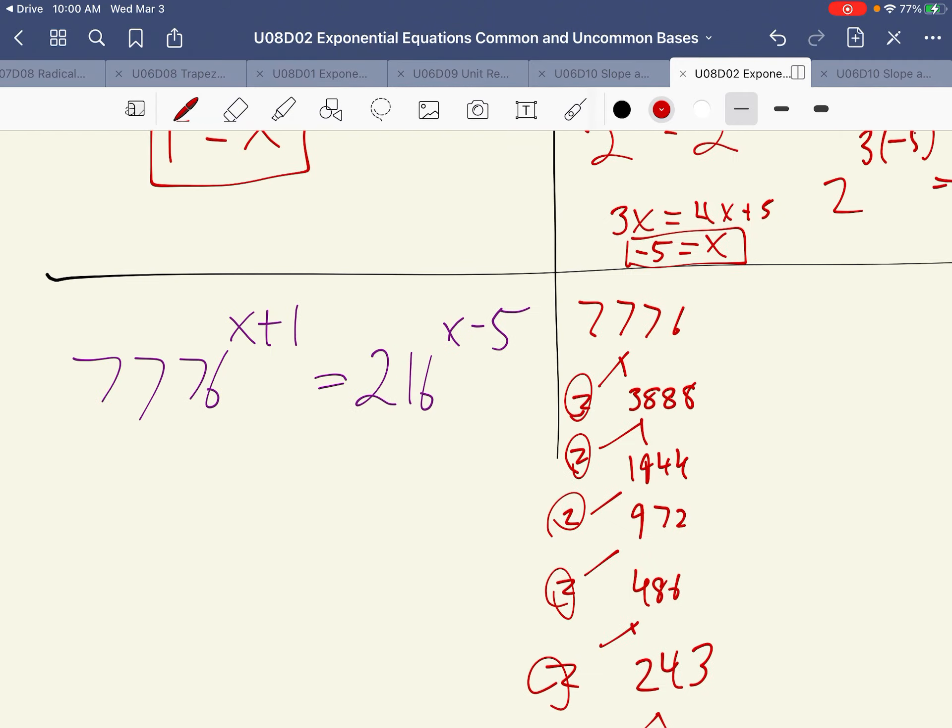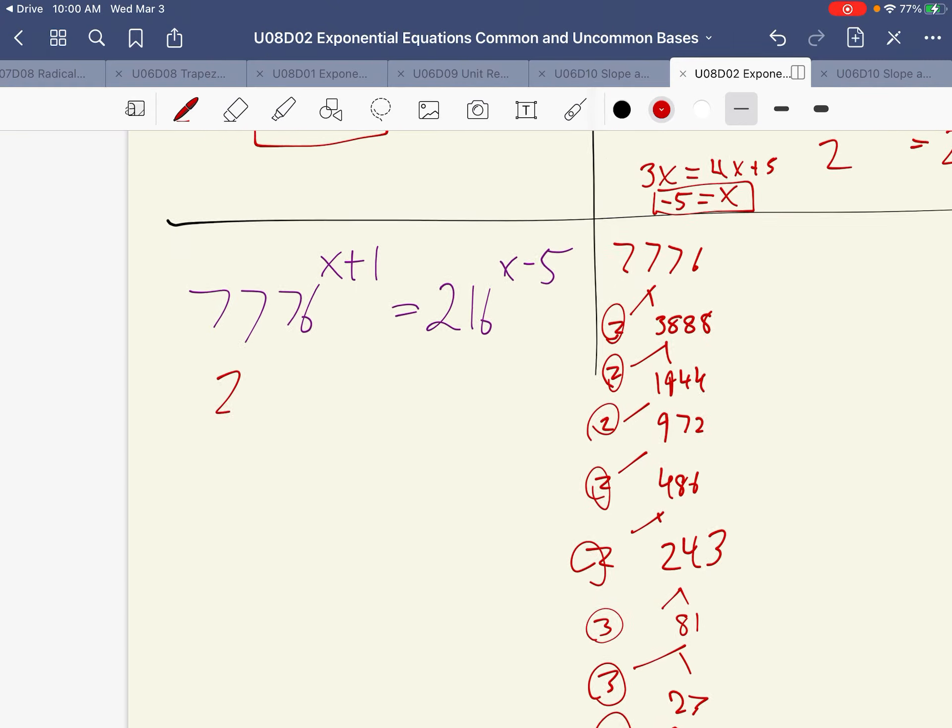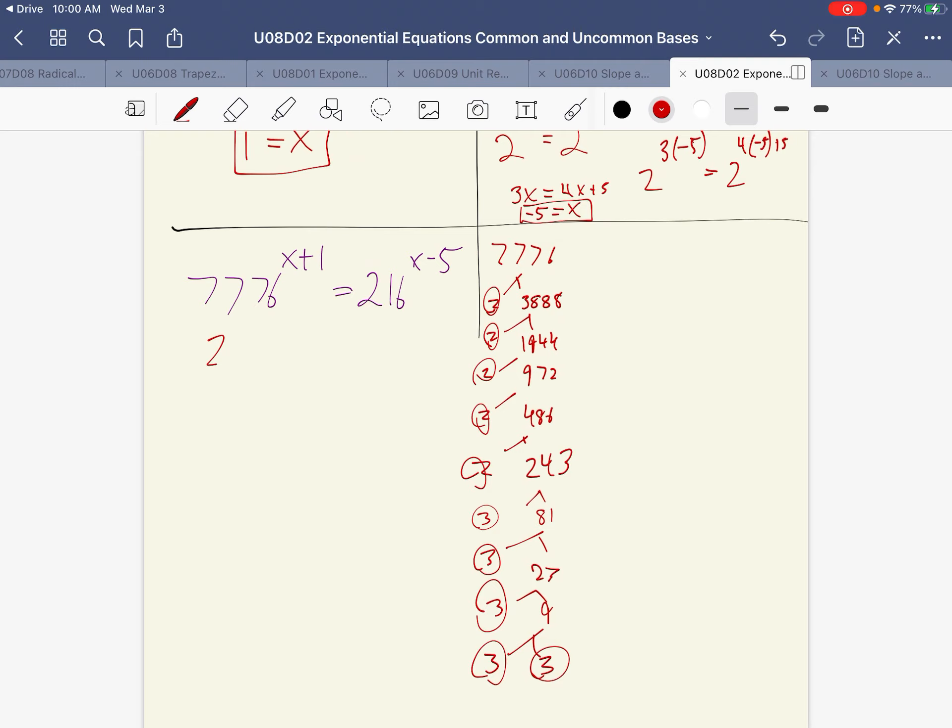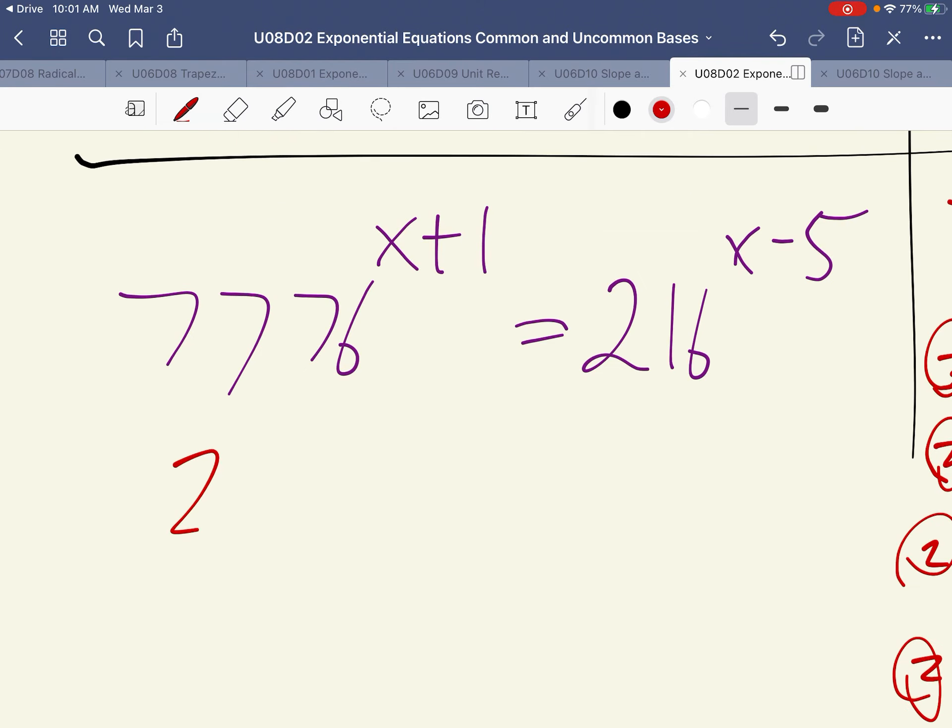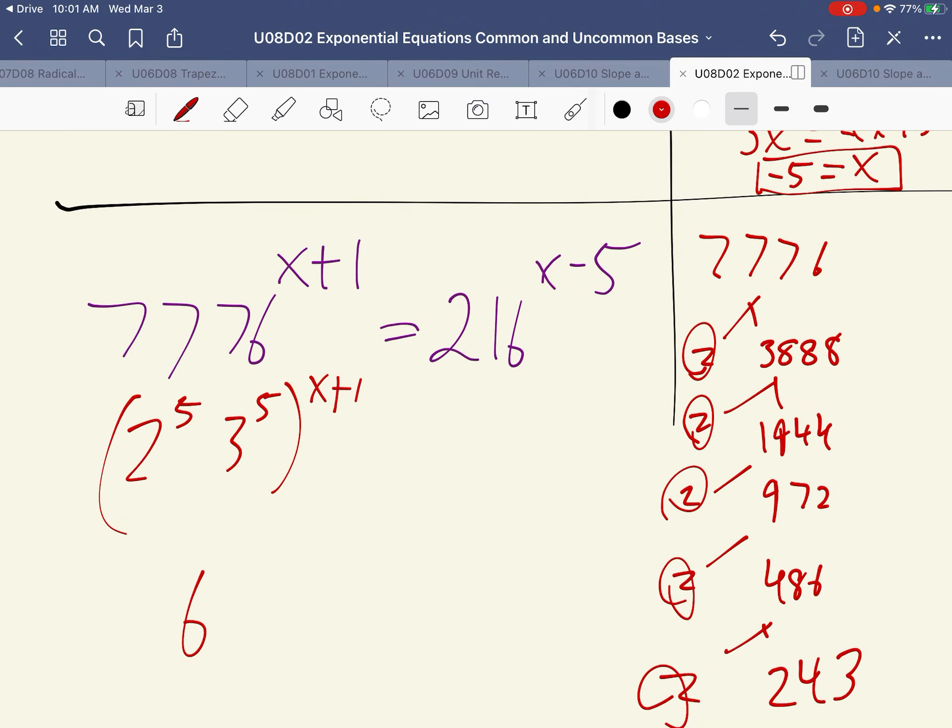So this number is actually equal to 2 to the 1, 2, 3, 4, 5, 5 2s, and 1, 2, 3, 4, 5 3s. So this is 2 to the 5th and 3 to the 5th, which is actually equal to 6 to the 5th, because 2 times 3, 5 times is going to be 6, and there's 5 of those.